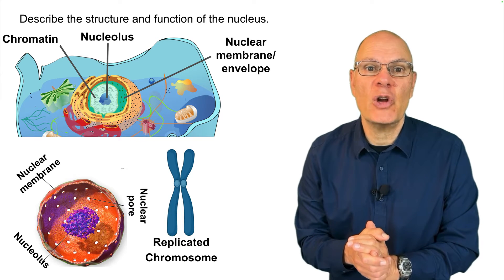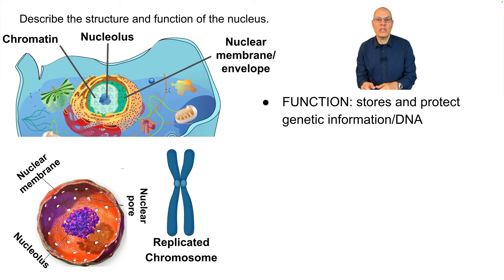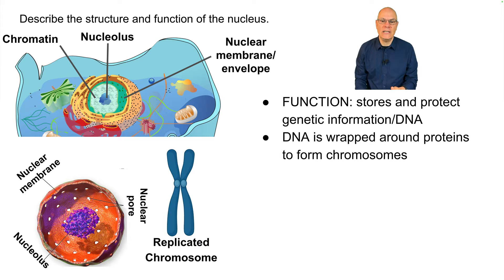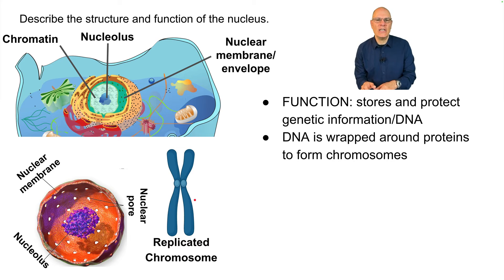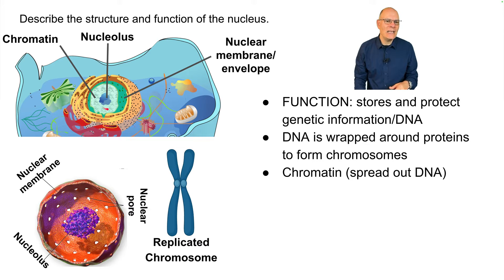Describe the structure and function of the nucleus. The nucleus's function is to store and protect genetic information in the form of DNA. The DNA is wrapped around proteins to form chromosomes. This representation is only present during mitosis or meiosis, when cells are dividing. Otherwise the DNA is more diffuse and spread out — it's still in chromosomes, but we call that form chromatin.